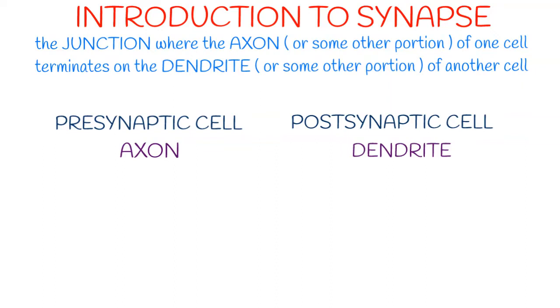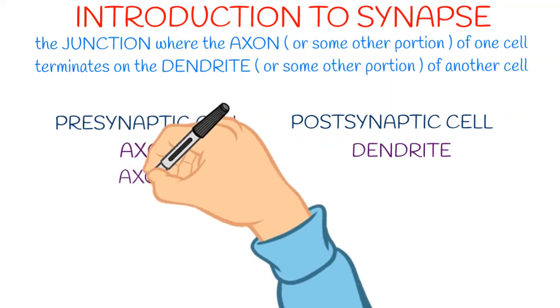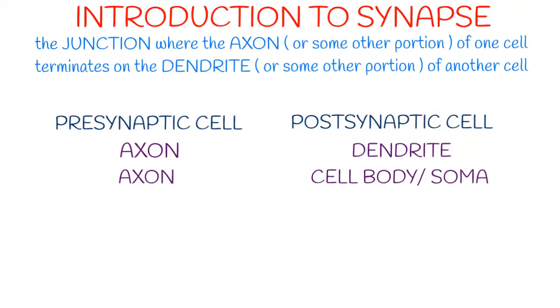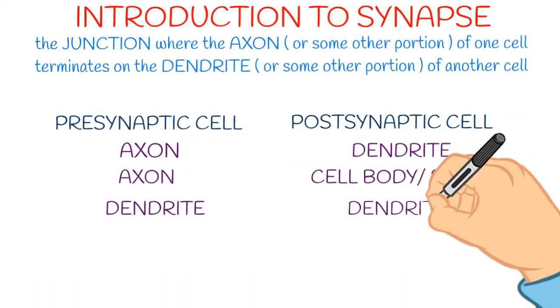For example, axon and instead of dendrite, the cell body or soma is forming the synapse. Likewise, instead of axon and dendrite, both dendrites are forming synapse.